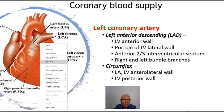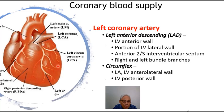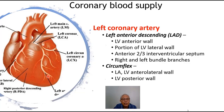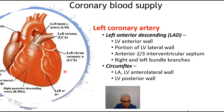The left anterior descending coronary artery — pointing to it here — feeds the left anterior wall as well as portions of the left ventricular lateral wall. In addition, it feeds two-thirds of the interventricular septum. As far as the cardiac conduction system is concerned, it supplies blood to the right and left bundle branches.